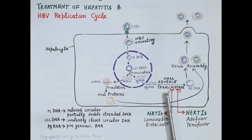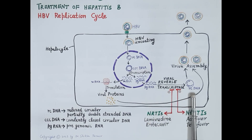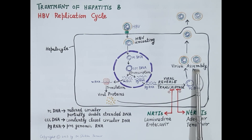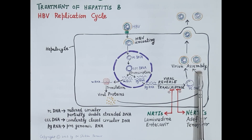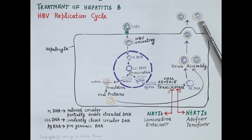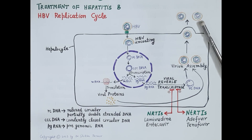The viral enzyme reverse transcriptase converts the viral pre-genomic RNA to viral DNA. Viral proteins and viral DNA are then assembled in the Golgi apparatus of the host to produce viral progenies. These viral progenies are released from the infected host cell and go on to infect other liver cells. This is how hepatitis B virus replicates in the host cell.